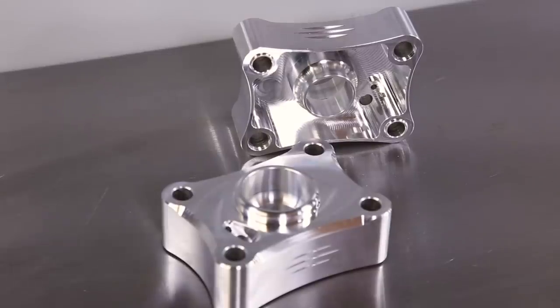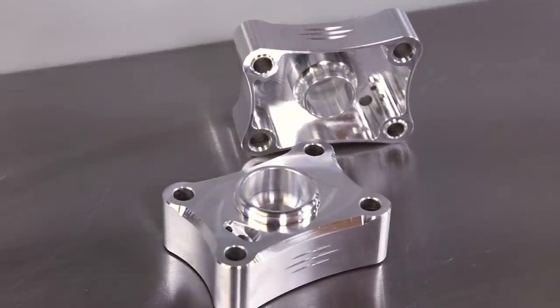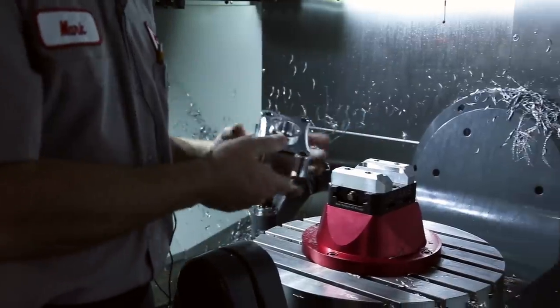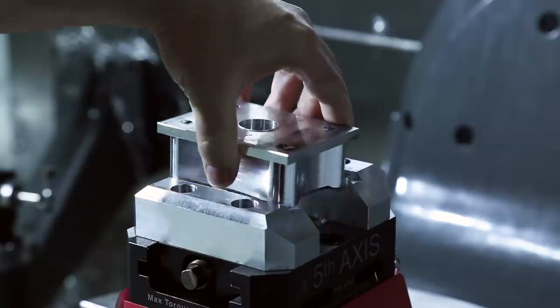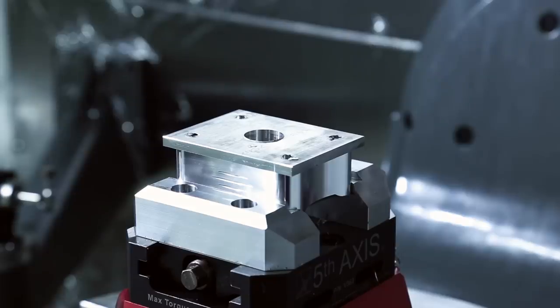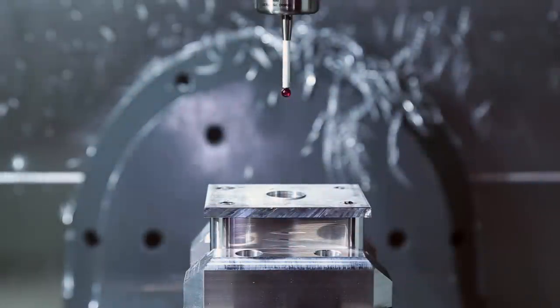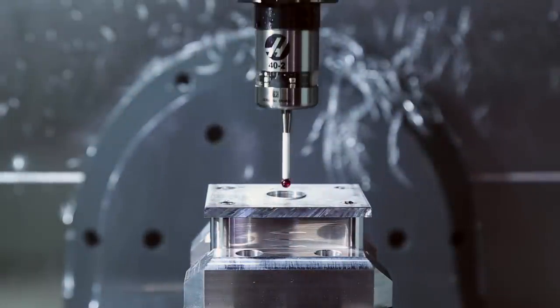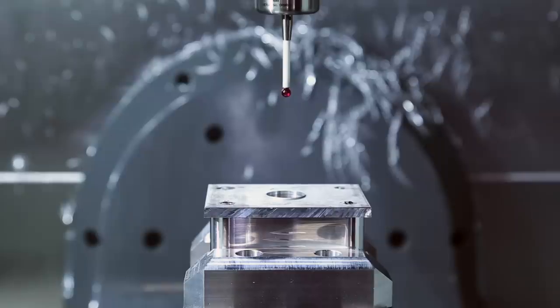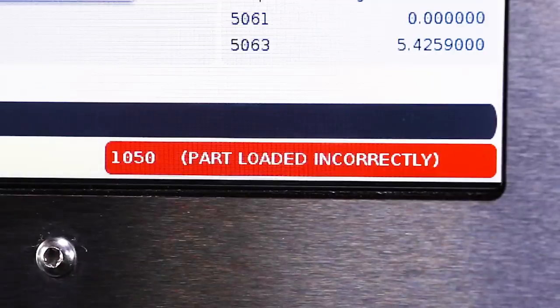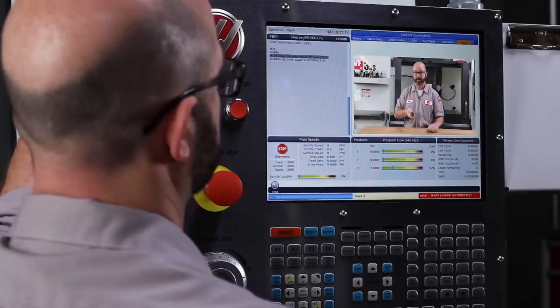Now this same style of macro can be applied to a part like this one where you run both the first and the second operation in the same vice. With one probe hit and the code we showed you, you can tell if the part is loaded correctly, whether it's running the first operation or the second. And we can give the operator instructions through a custom alarm telling them if something is off. It's all about avoiding mistakes.